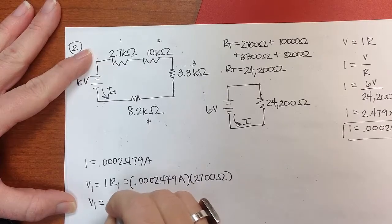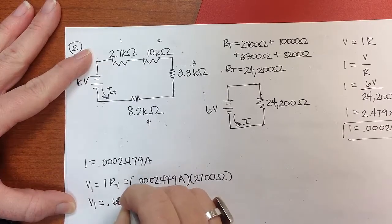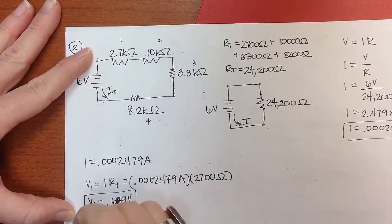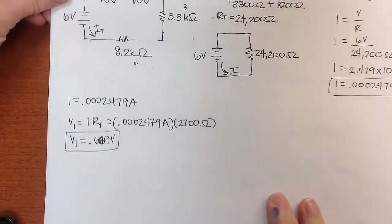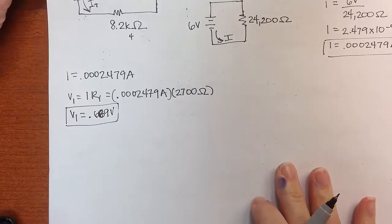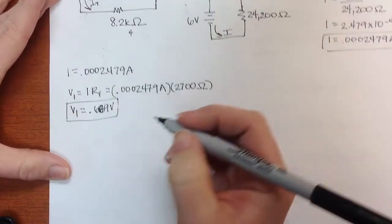That gives me V1 is equal to 0.66 volts for the first one. Well, that's a very small voltage drop, but that's the smallest of my resistors, so it's going to have the smallest voltage drop.